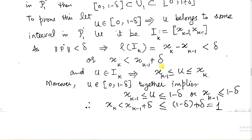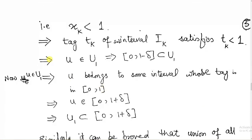Replacing x_{k-1} by the larger value 1 - delta, we get x_k < x_{k-1} + delta ≤ (1 - delta) + delta = 1, so x_k < 1. This proves that the tag t_k of sub-interval I_k satisfies t_k < 1, since t_k is in [x_{k-1}, x_k]. This implies u belongs to u1, because u1 is the union of all sub-intervals whose tags belong to [0, 1]. Hence [0, 1 - delta] ⊆ u1.